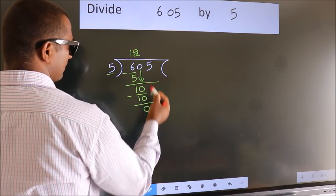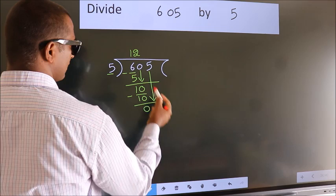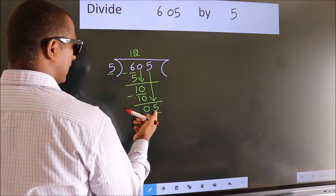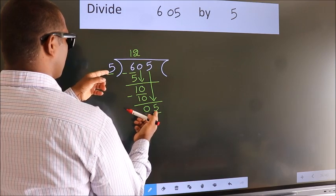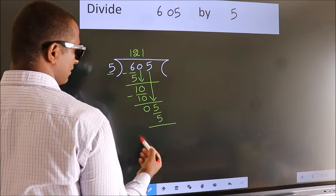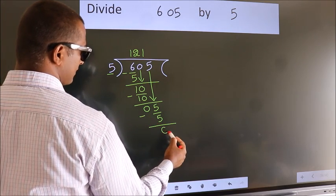After this, bring down the beside number. So, 5 down. So, 5. When do we get 5? In the 5 table. 5 once, 5. Now we subtract. We get 0.